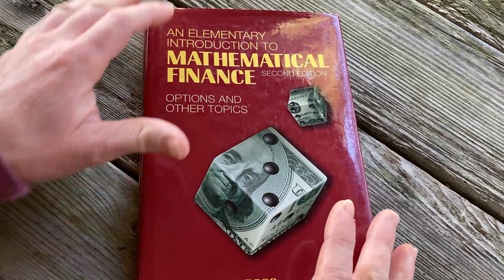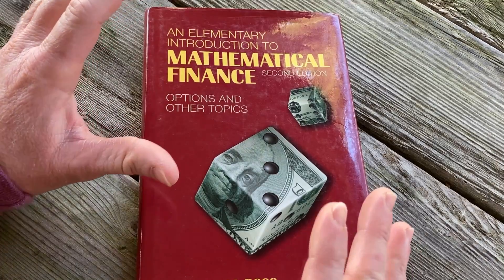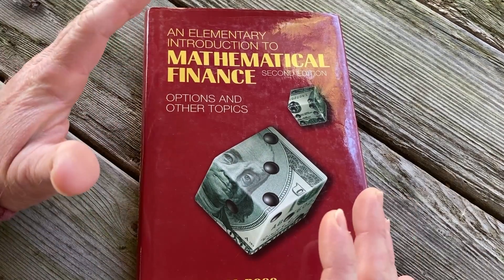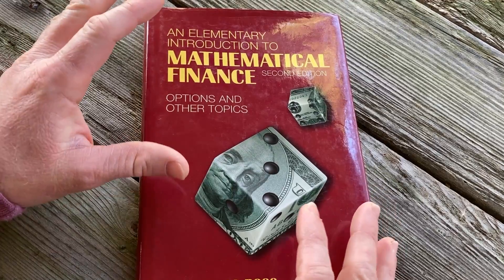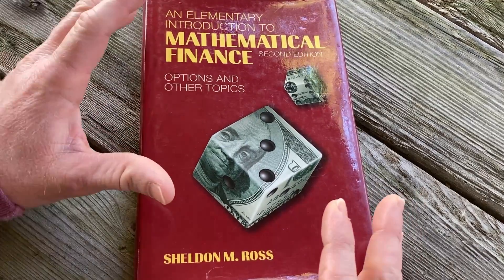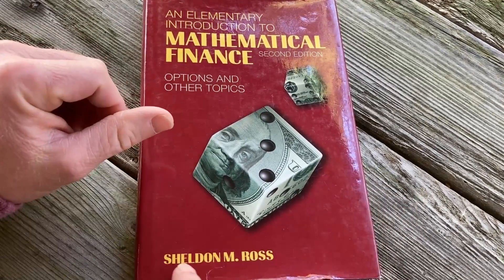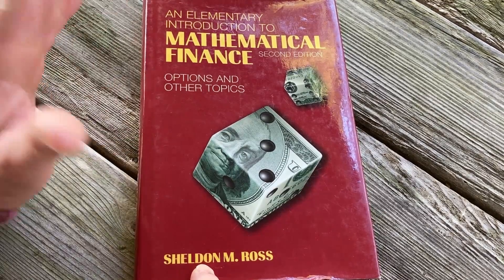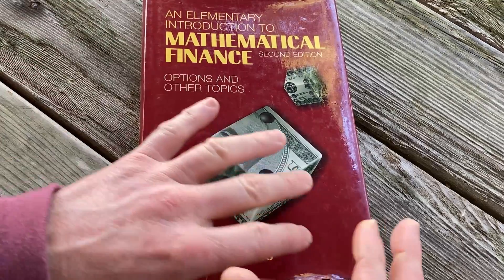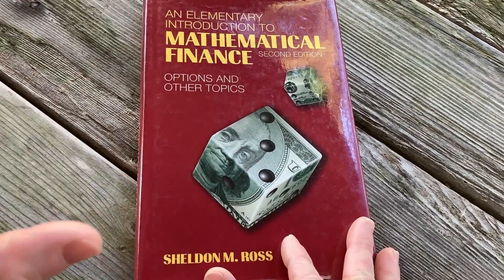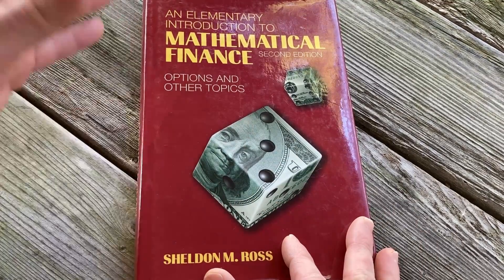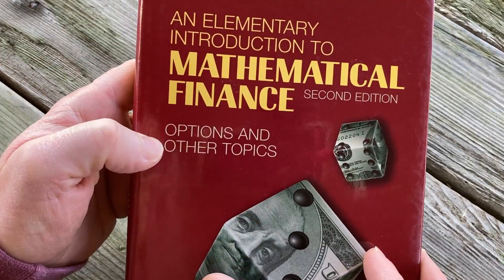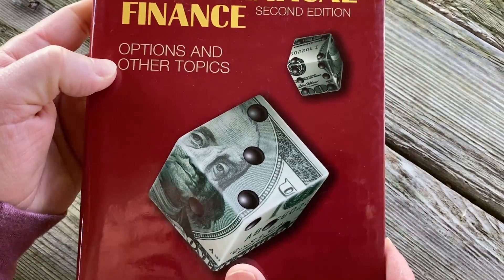But in this video I want to show you a book that actually talks about real mathematical finance and it's a rare book in the sense that there's not many books that are this good. This one is written by Sheldon Ross. I have another book by Sheldon Ross that I really like. It's on stochastic processes. It's more advanced than this one but it's very good as well. This one is an elementary introduction to mathematical finance options and other topics.